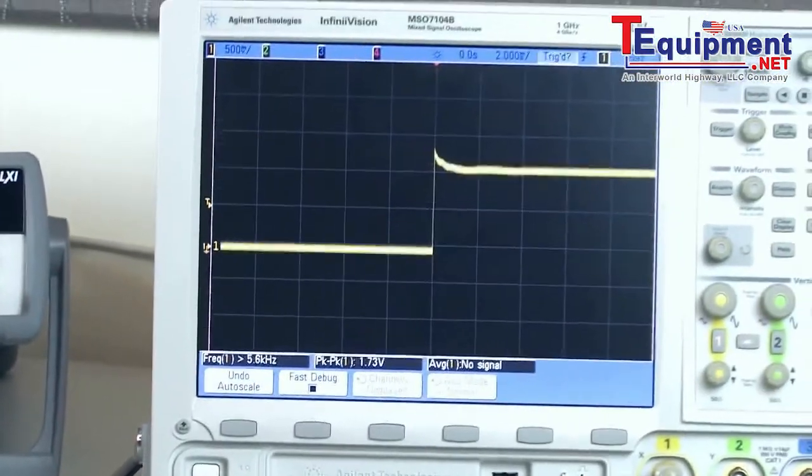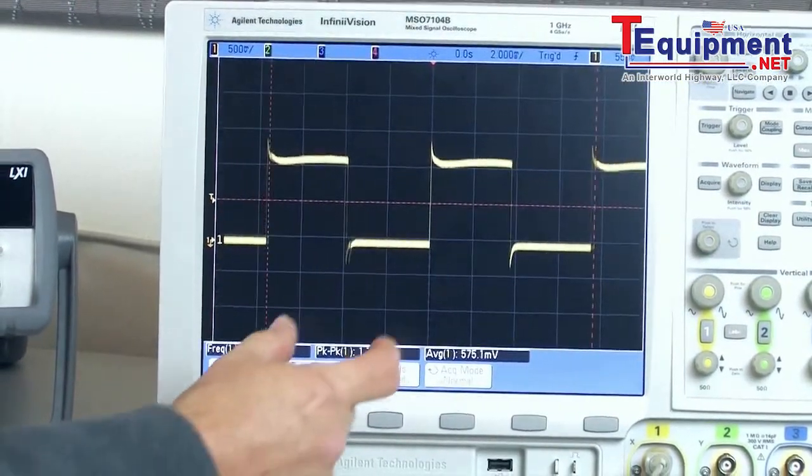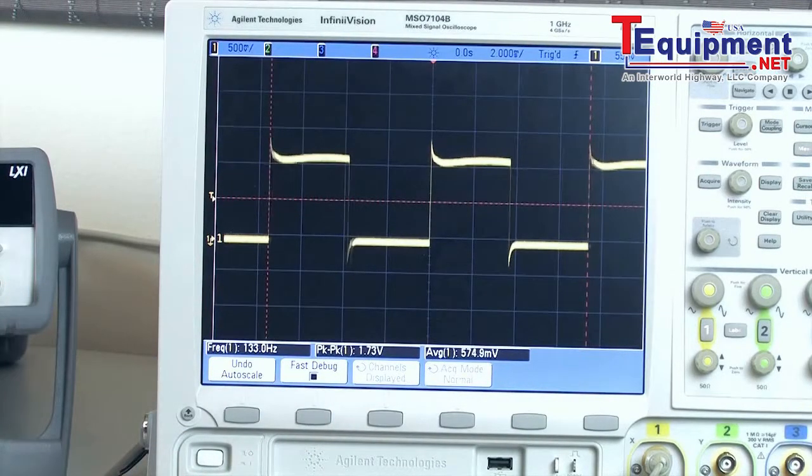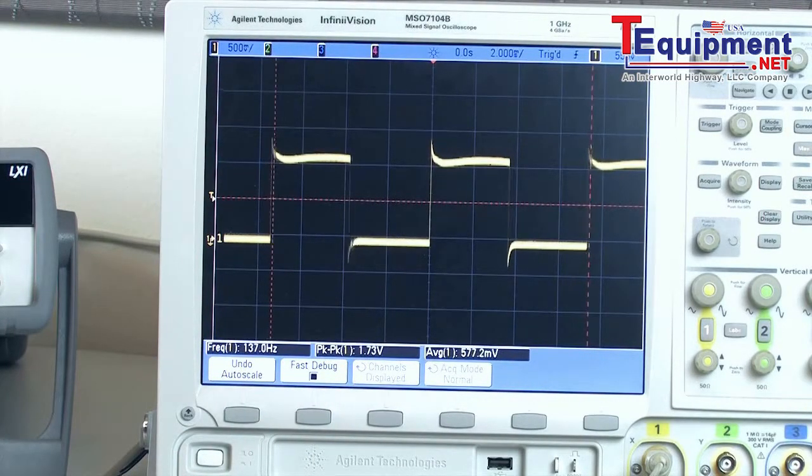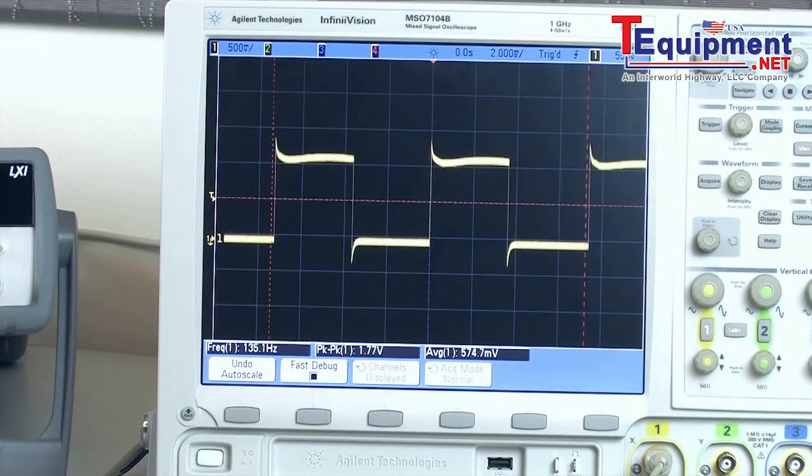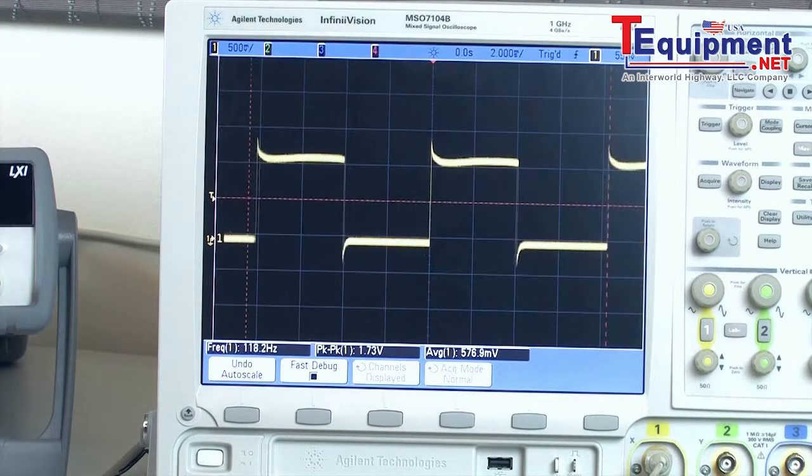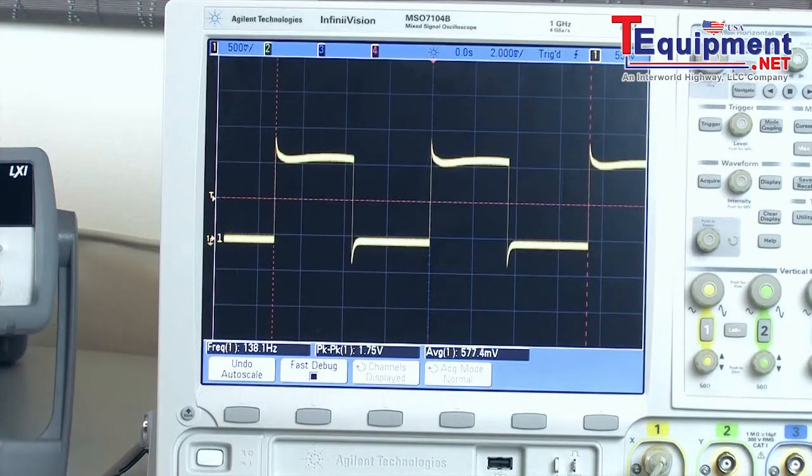So when I turn it on, we see a series of pulses on the scope. And if I slow the fan down a little bit, don't try this at home, by the way, but I'm going to put my finger in here and actually slow it down a little bit.